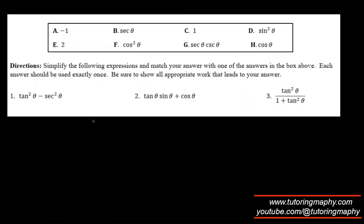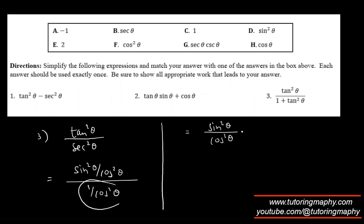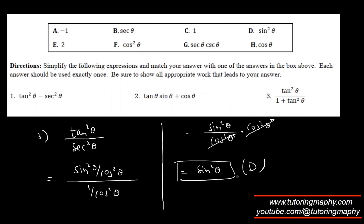For question 3, we have tan²θ/(1 + tan²θ). Using the Pythagorean identity, 1 + tan²θ = sec²θ. Writing tan²θ as sin²θ/cos²θ and sec²θ as 1/cos²θ, then using keep-change-flip (KCF), the cos²θ terms cancel, leaving sin²θ — that's option D.